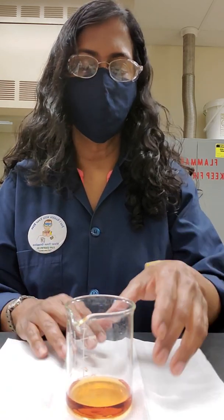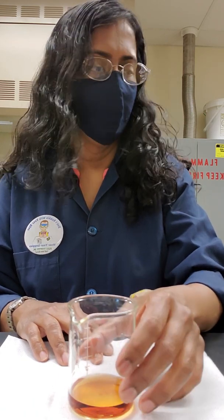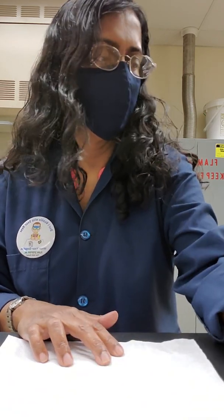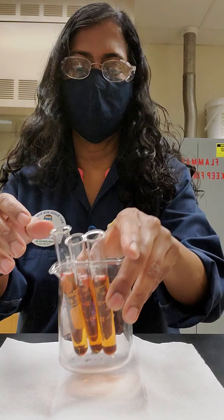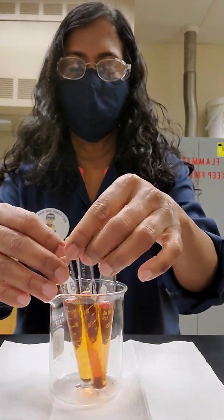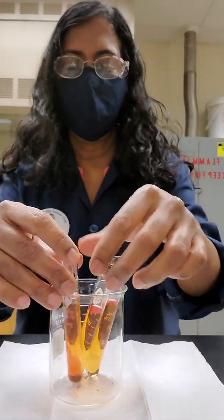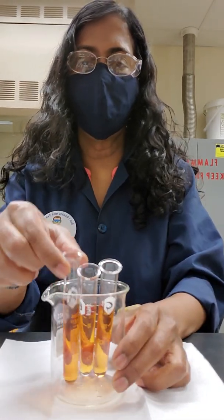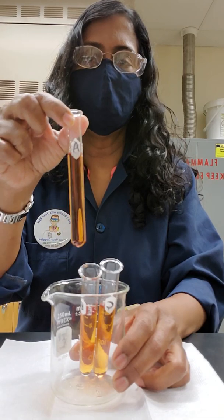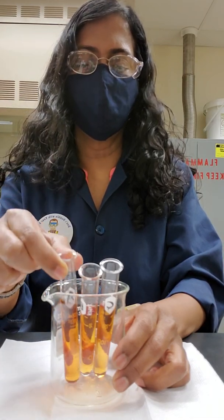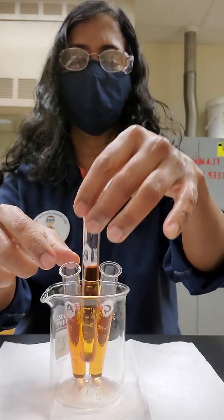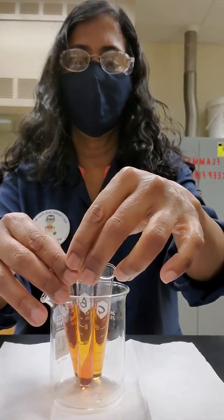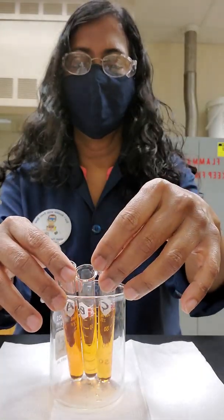Out of this solution, I added 10 milliliters into three test tubes. I have my three test tubes here labeled A, B, and C. Test tube A will act as our control experiment, and we are going to work with test tubes B and C.